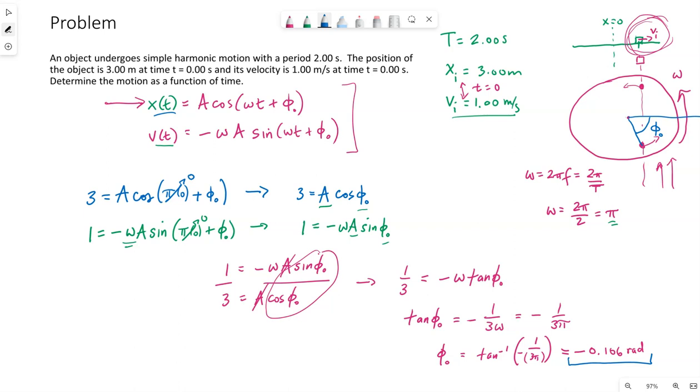So we have phi naught, we have omega. In terms of our equation, we need A, the amplitude. We can get that easily now from either one of these equations that we wrote out for position and velocity. The position one looks easier to solve. A here would be three over cosine of phi naught. So three over cosine of, we've calculated that phi naught now, so three divided by the cosine of that angle, I'm getting 3.02. The units will be meters, and that's because the three is in meters. The initial position was in meters.